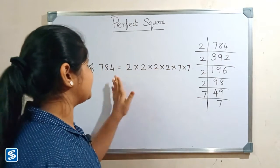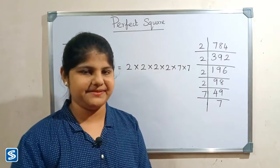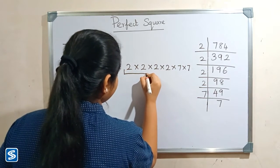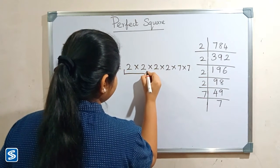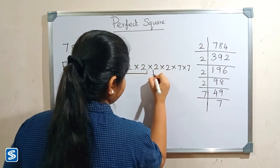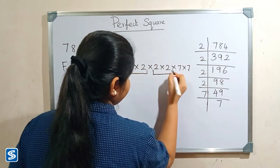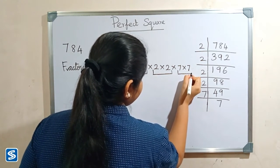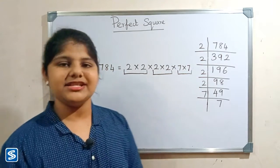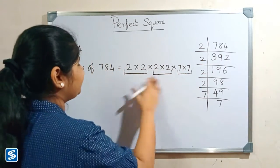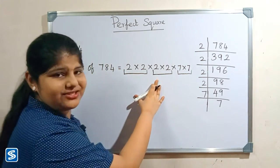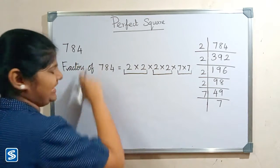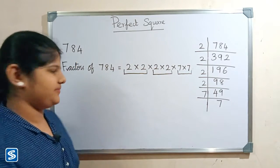Next we have to group the similar factors in pairs. As you can see, after grouping there is no factor left. So 784 is a perfect square.